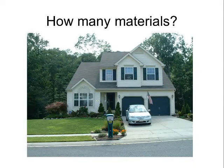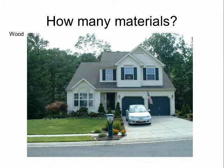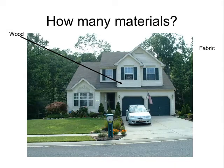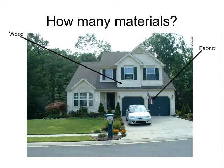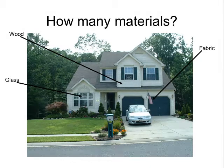Now, here we have a house. How many materials do you see? Can you tell me where the wood is? Right there — the house is made out of wood, and you have the trees behind it as well. Fabric — can you tell me where you can see fabric? Right there, it's the flag. Glass — did you figure out where the glass is? The windows are made out of glass.